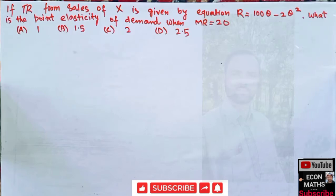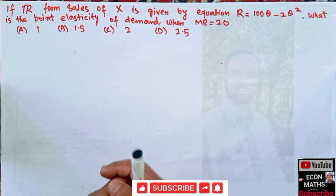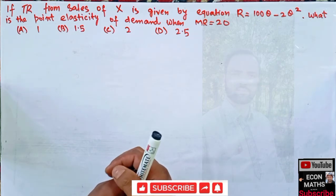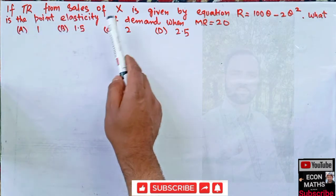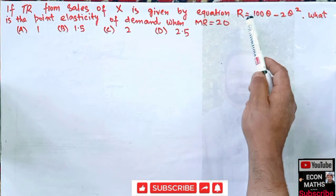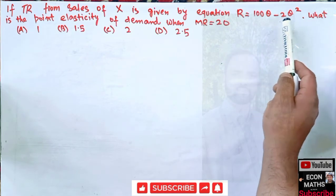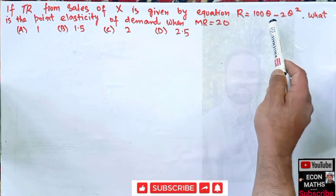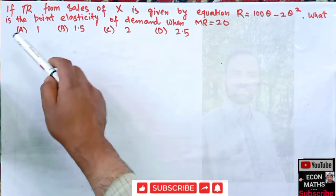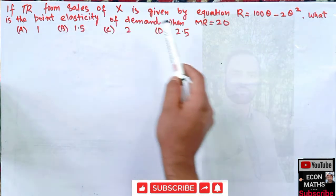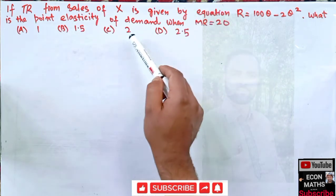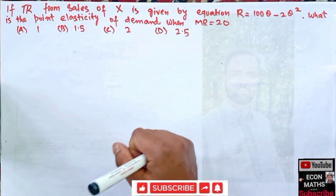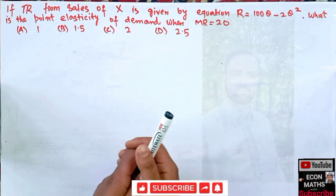In this video we will try to learn how to find point elasticity of demand from a given revenue function. The question is: if total revenue from sales of good X is given by R = 100Q − 2Q², where R is total revenue and Q is quantity, what is the point elasticity of demand when marginal revenue is given as 20? The options are 1, 1.5, 2, and 2.5.